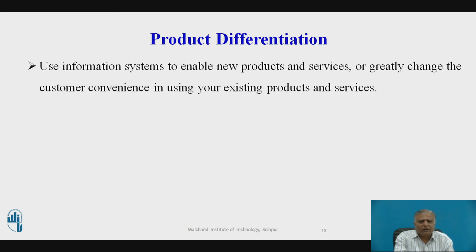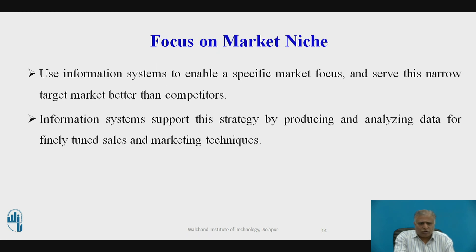The interactive section on technology describes many new technology-based products and services offered by car companies. A number of companies have developed IT-based products and services that other firms have found difficult — or at least take a long time — to copy. Focus on marketing: use information systems to enable a specific market focus and serve a narrow target market better than competitors. Information systems support this strategy by producing and analyzing data for finely tuned sales and marketing techniques, enabling companies to analyze customer buying patterns, tastes, and preferences to pitch advertisements and marketing campaigns to smaller and smaller target markets.